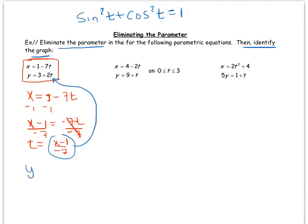By doing that I get y equals 3 plus 2 times (x minus 1) over negative 7. So we've eliminated the parameter, that part's done.